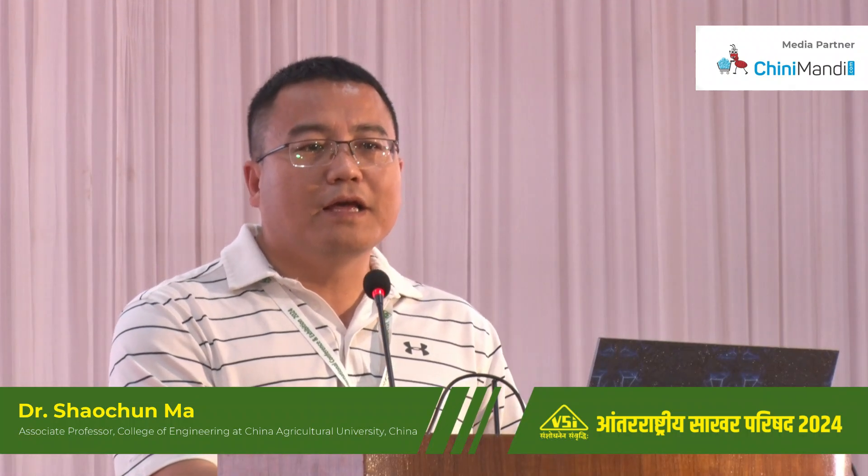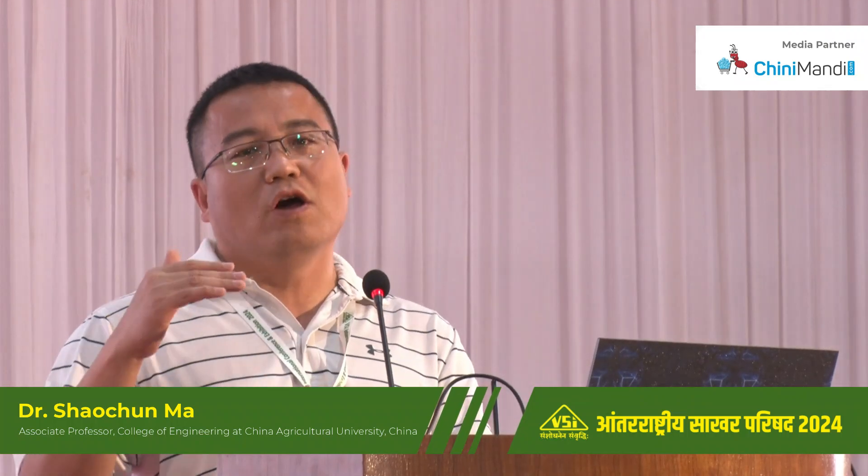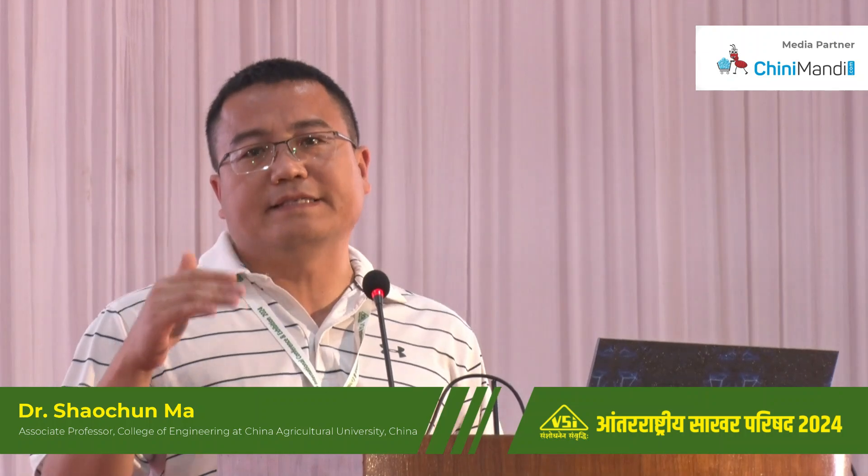However, for the sugarcane harvesting, the mechanical harvesting level is unbalanced. We know in Australia and the U.S., the mechanical harvesting is about 100%. In Brazil, more than 85% by machines. In China and India, the mechanical harvesting level is low — I think it is less than 10%.